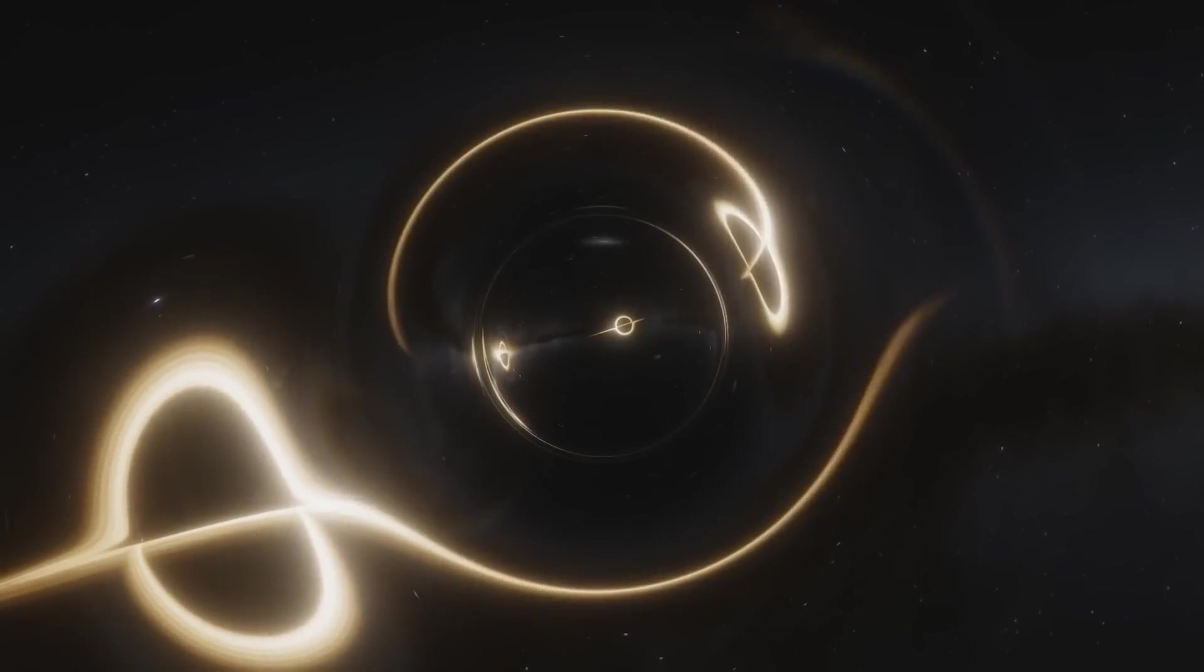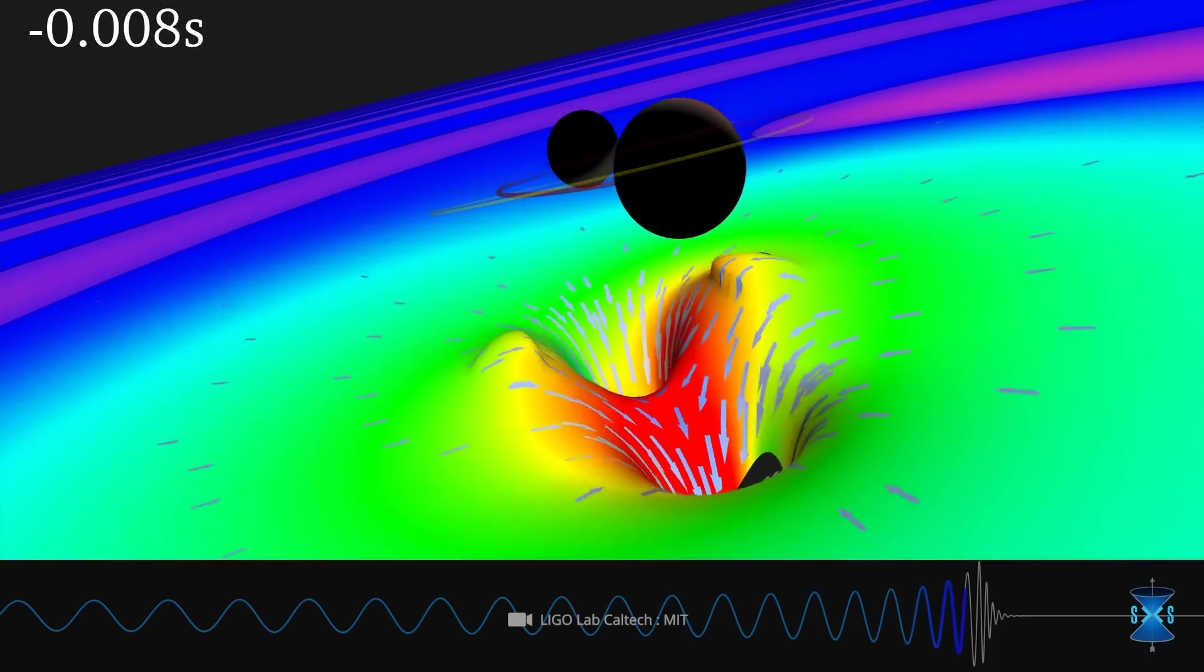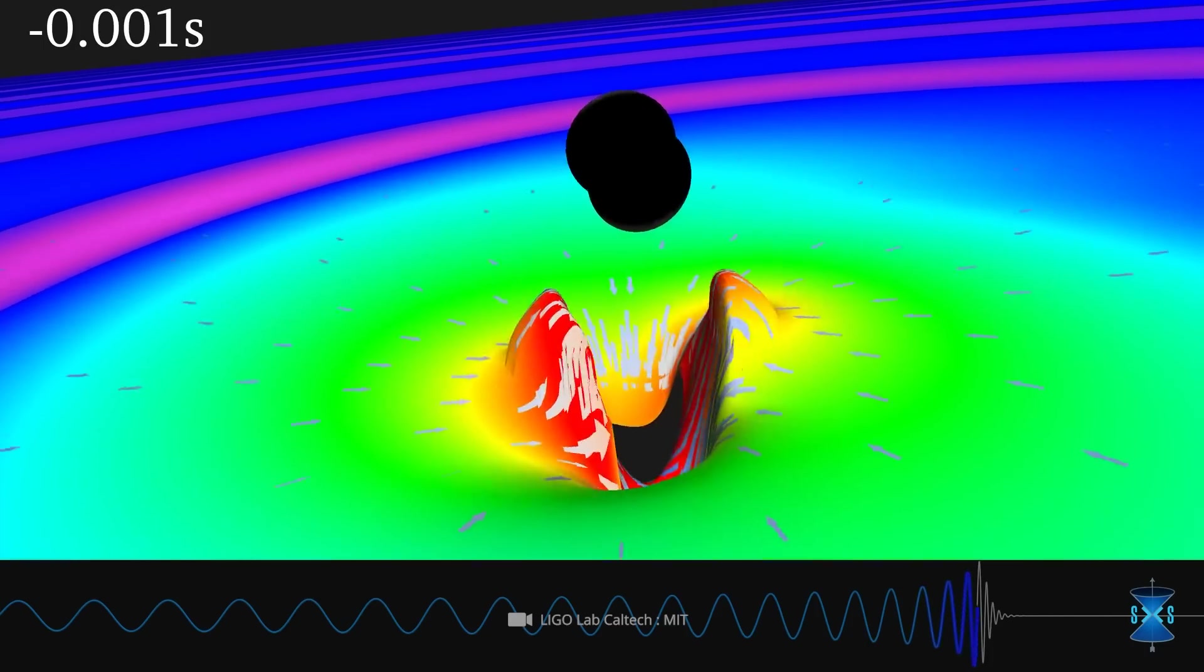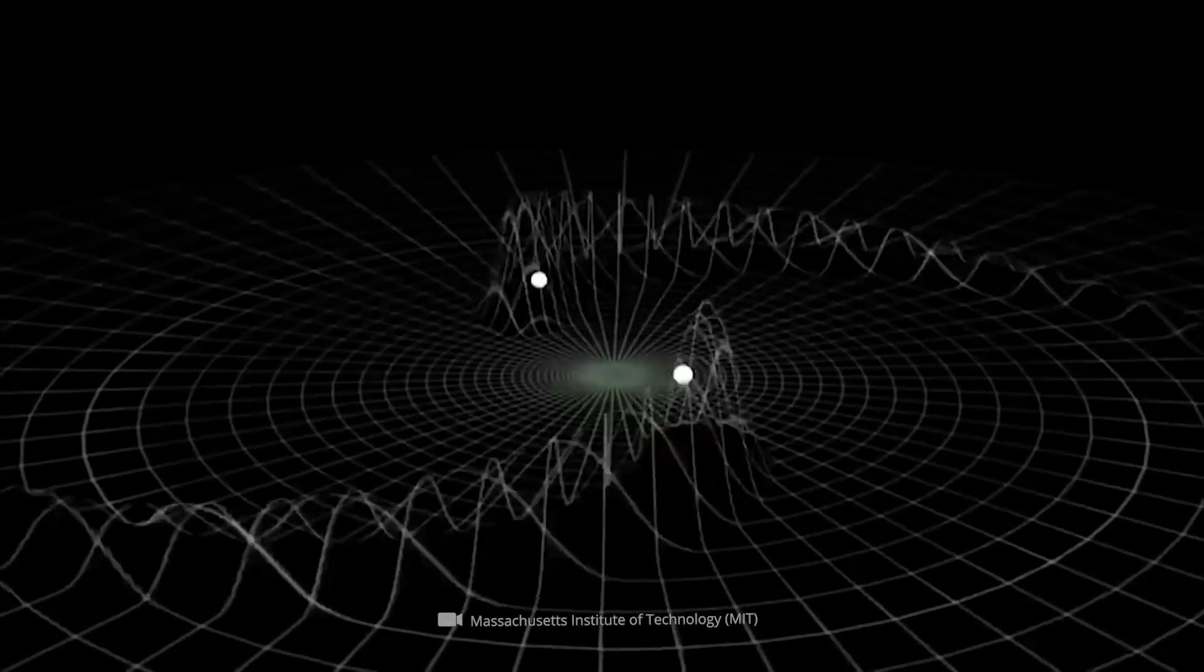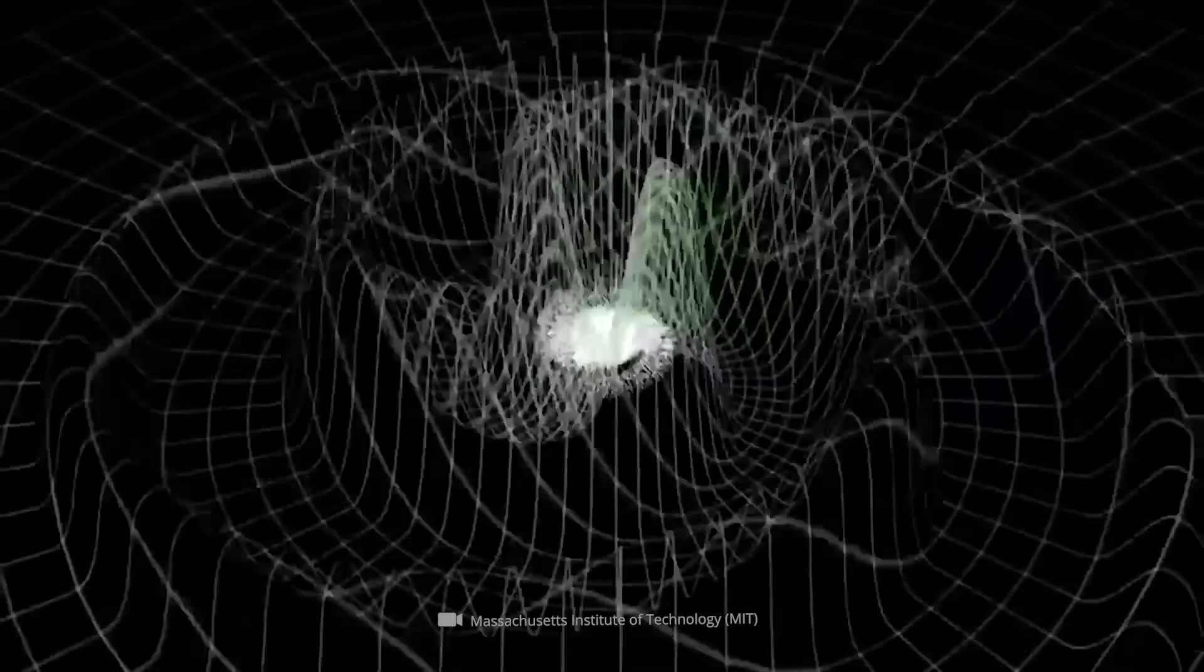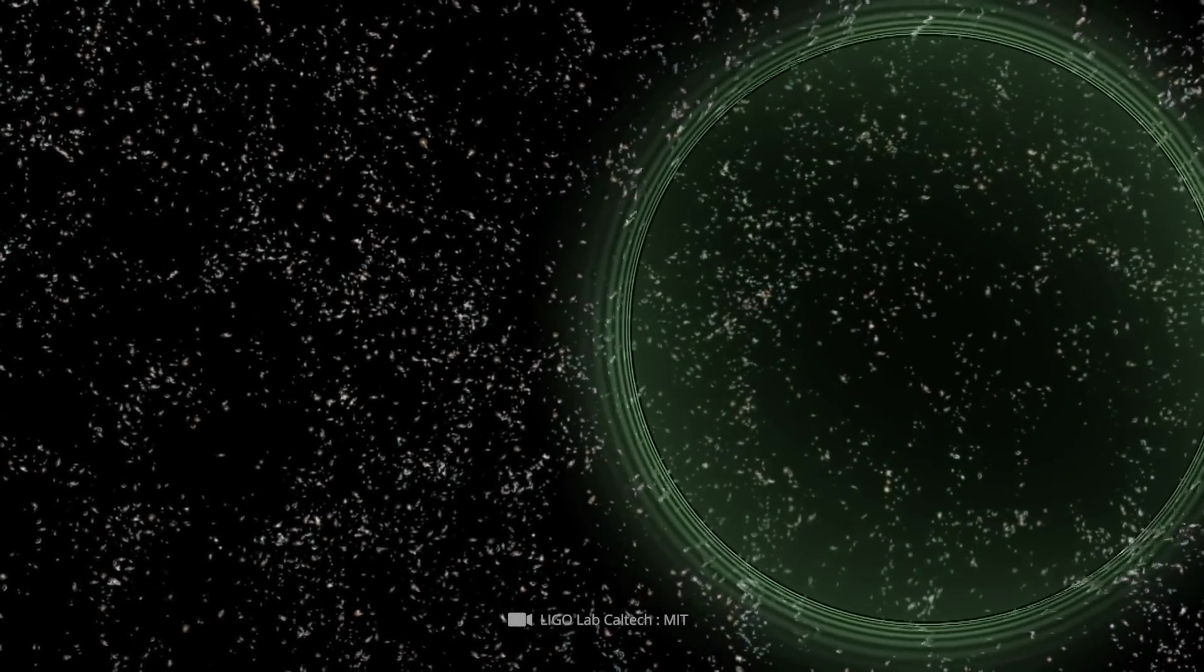The collision of two black holes is an event of incredible size and energy that permanently alters the structure of space-time. As you can see, the gravitational waves that are generated are noticeable even on Earth, albeit in a very, very fine range.